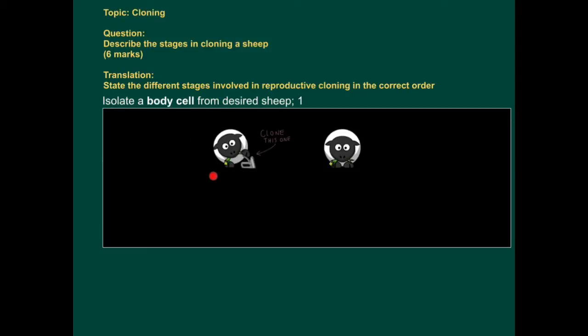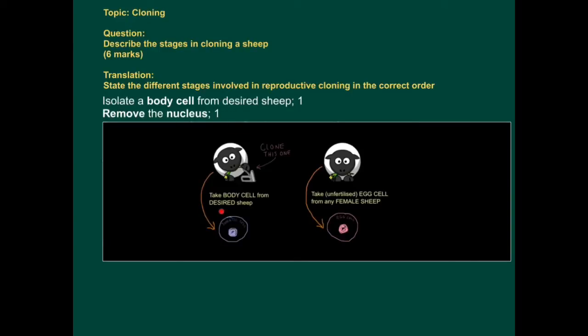Let's say this is the sheep we want to clone. The first thing we have to do is isolate, that means separate a body cell from the desired sheep. So take and extract a body cell. We then remove the nucleus from the body cell because that contains all the genetic information needed to make an exact copy of that sheep.